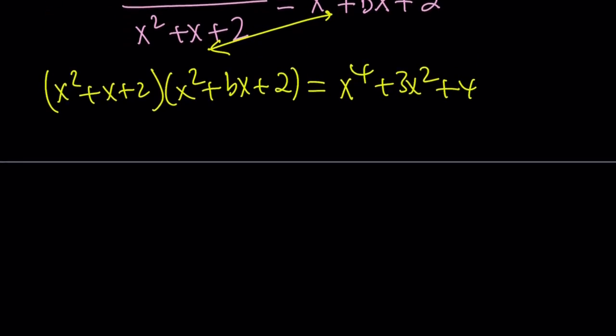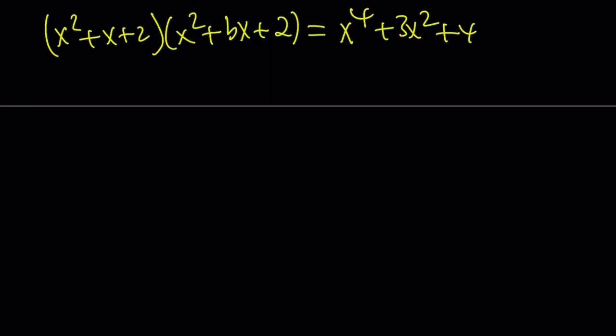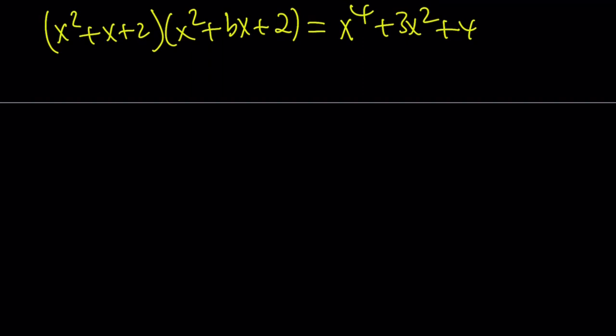Great. So these are polynomials on either side. We're going to set them equal, arrange the coefficients, and then just solve the equation that way. So we're going to find the unknown b.